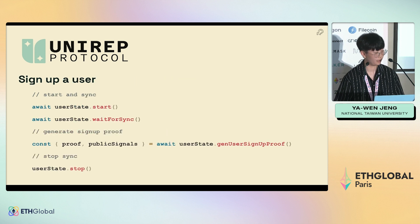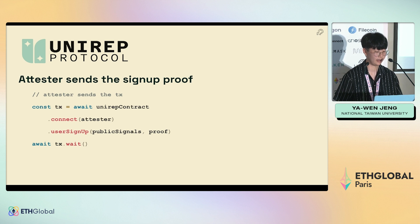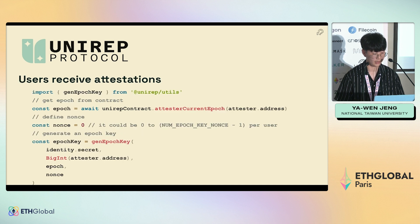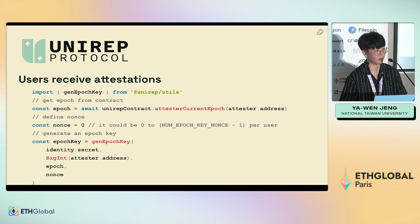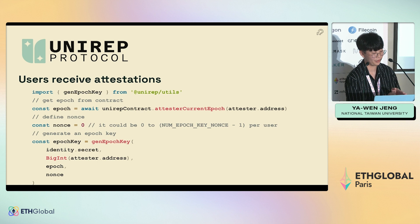When the user generates this proof on the client, the user should submit this proof to the attester or application. Only the attester can call the UNIREP contract to send proofs on-chain and update the smart contract state. To receive attestations or data or reputation, the user should generate a temporary identity called an epoch key. You can imagine having a list of wallet accounts that people cannot link to you. In UNIREP, you can generate a set of epoch keys and prove that all these assets are yours.